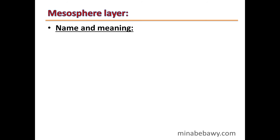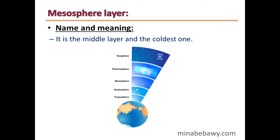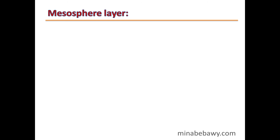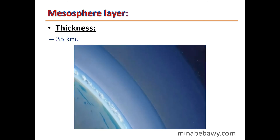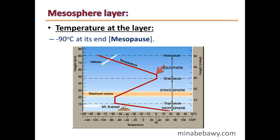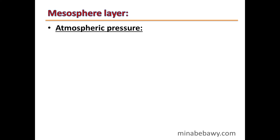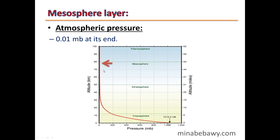The third layer is the Mesosphere. It is called Mesosphere because it is the middle layer and also the coldest layer. Its thickness is 35 km. The temperature starts at 0°C at its beginning and decreases gradually until it reaches −90°C at its end, the Mesopause. Atmospheric pressure also decreases, reaching only 0.01 mb at the Mesopause.